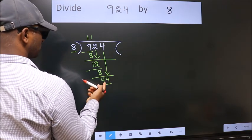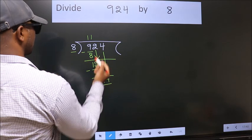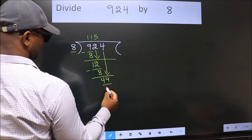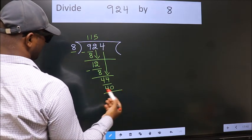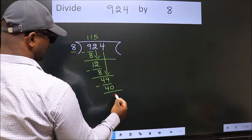A number close to 44 in 8 table is 8 5s 40. Now, we subtract. We get 4.